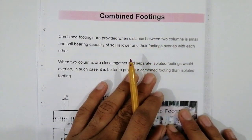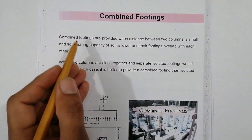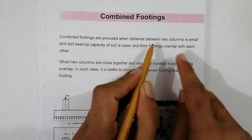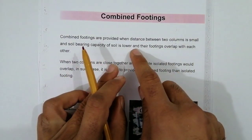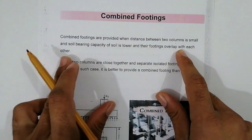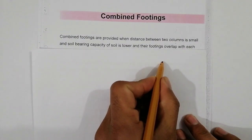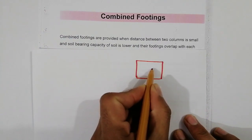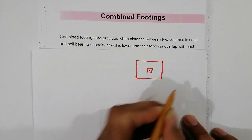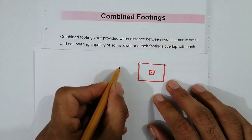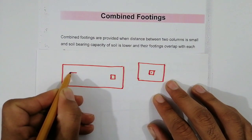So what is combined footing and foundation? Combined footings are provided when the distance between two columns is small and the soil bearing capacity is low, and their individual footings would overlap with each other. As you can see, isolated footing supports just one column, while combined footing supports two columns together.